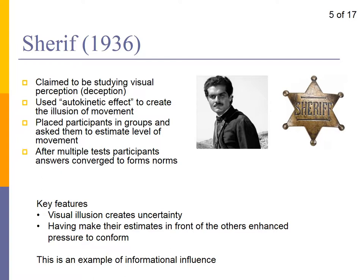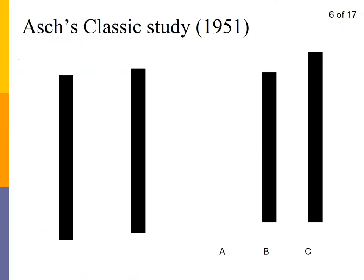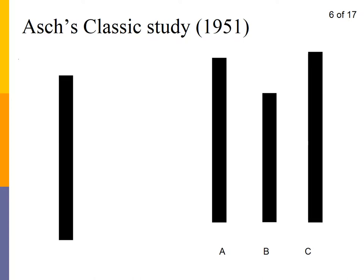This raises a very interesting question: what would we do in a scenario where it is clear what the right thing to do is? Would we still use other people as a reference point then? That was a question explored by a different researcher in what became an equally iconic study. It would be some 15 years after Sherif's original study before we got an answer to what people would do in a situation which was unambiguous — would they still go along with what everybody else was doing, or would they follow their own judgement?